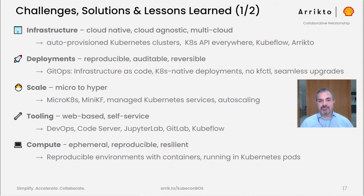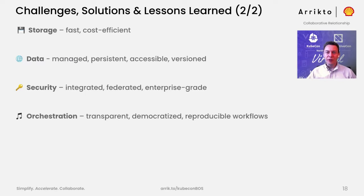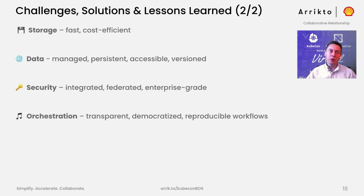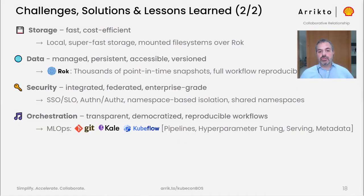More challenges: storage needs to be fast and cost-efficient so we can decouple compute and storage. Data should be secure at all times, available for authorized users, and versioned so we know what changes happen over time. Security must be end-to-end, enterprise-grade, and integrated with corporate identities. Orchestration needs to be transparent and non-disruptive, so any user can easily orchestrate reproducible workloads rather than relying on a dedicated orchestration engineer. For storage, we moved from a shared file system over NFS — EFS on AWS — to local super-fast mounted file systems provided by ROC. ROC sits alongside this local storage and gives you thousands of point-in-time snapshots for end-to-end reproducibility of workloads.